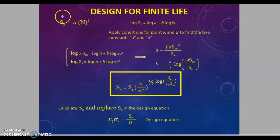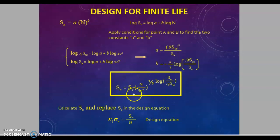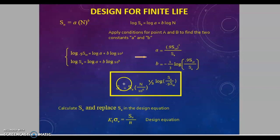For design of finite life, the equation for the exponential curve is converted to logarithmic form, so a straight-line equation is obtained. From that, constants small a and small b are calculated. The strength — that is the fatigue limit or endurance limit — and the strength value at a given number of cycles can be obtained from this formula.